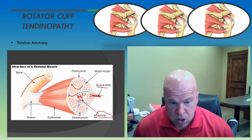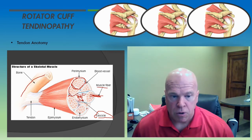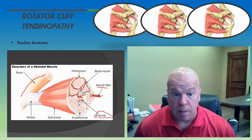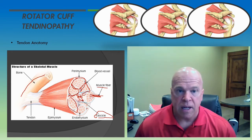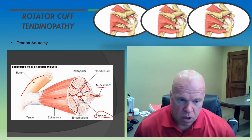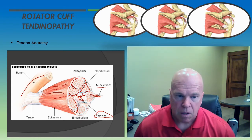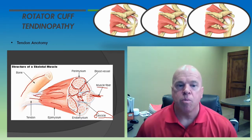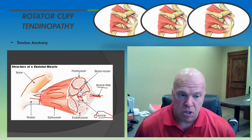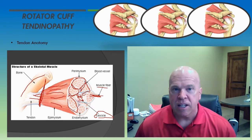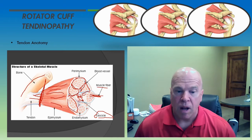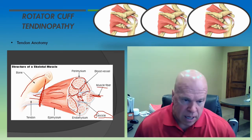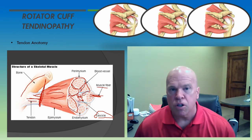Each of the fascicles themselves are covered by another connective tissue layer known as the perimysium — connective tissue meaning collagen fibers. Each of these fascicles is surrounded by connective tissue that travels the length of the muscle and becomes contiguous, continuing past the point at which the muscle fibers terminate. This point is known as the musculotendinous junction. The connective tissue layering — the perimysium around the fascicles and the endomysium around the individual muscle fibers — continues past the musculotendinous junction to become the tendon.